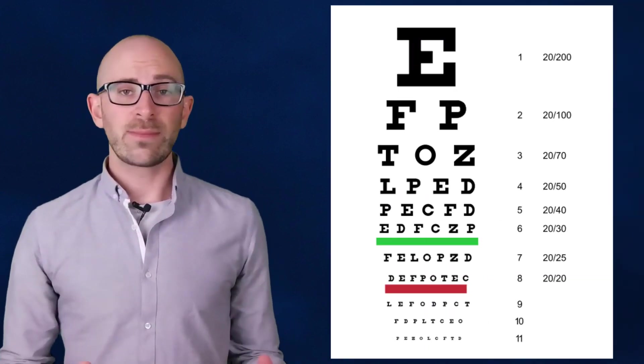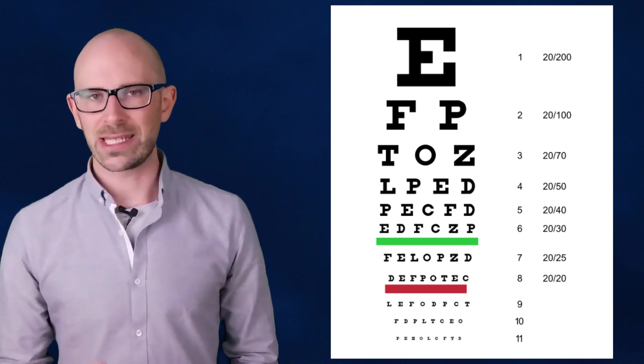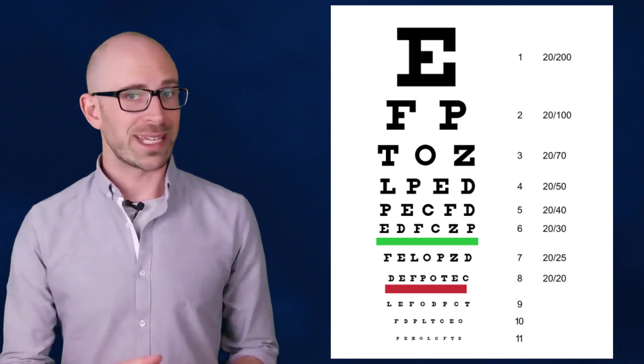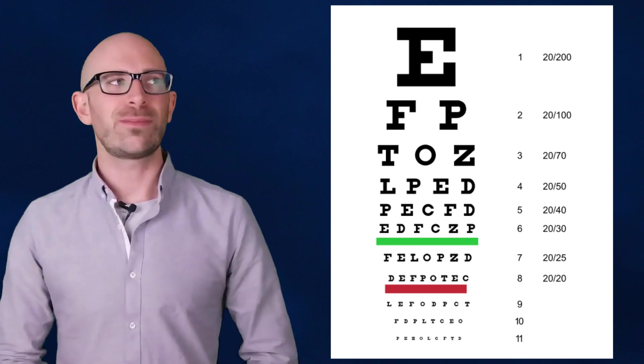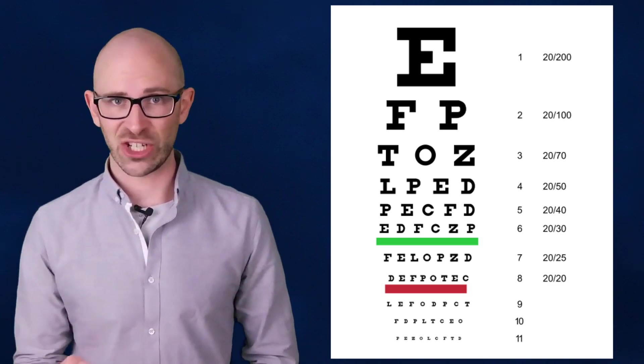If you imagine a typical eye test chart, the 20-20 vision is probably only the same as the second line from the bottom. The line below it is even smaller than 20-20 vision and would mean you have 20-16 vision. So don't be impressed the next time someone tells you they have 20-20 vision.